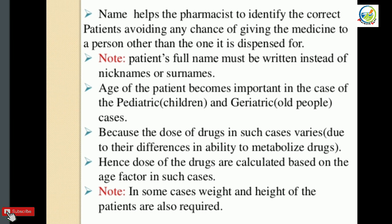The age of the patient becomes important especially in pediatric, children and old people cases. Age important hai kyunki jo doses hain — child dose, adult dose aur old age dose — sab ke liye alag alag doses hain, isliye age ko correctly maintain karna chahiye. Hence, the dose of the drugs is calculated based on the age factor in such cases.